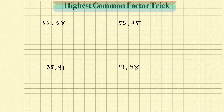Let's look at the first one: 56 and 58. Let's find the highest common factor. The first step is to find the difference — you're going to subtract the smaller number from the bigger number. So 58 minus 56 gives us 2.